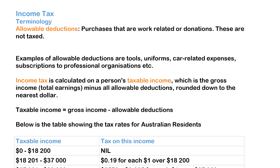Income tax is what you're taxed on your earnings, and this is calculated on your taxable income — how much you've earned in the year minus all your allowable deductions. So: taxable income equals gross income minus allowable deductions.